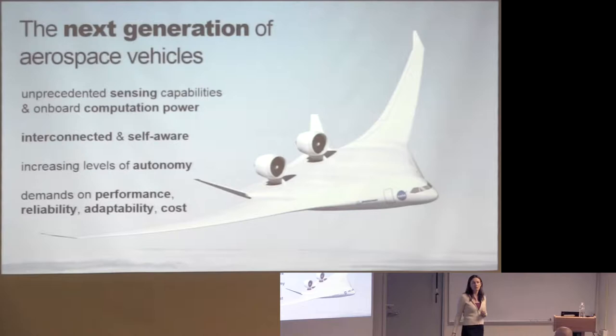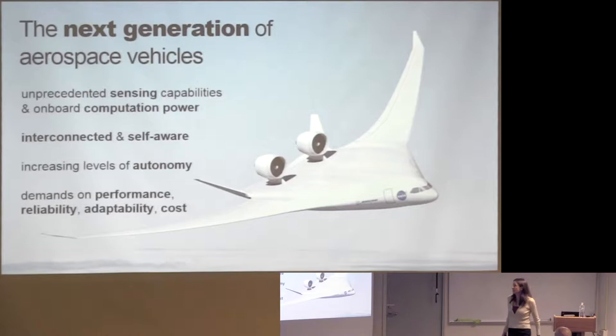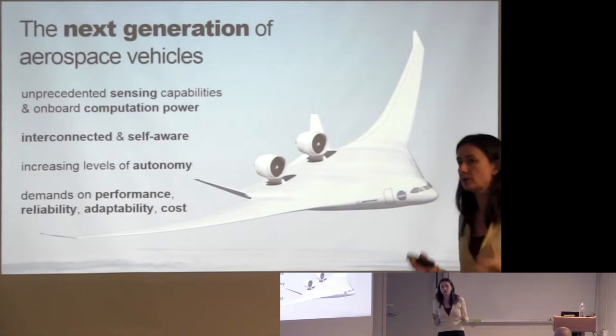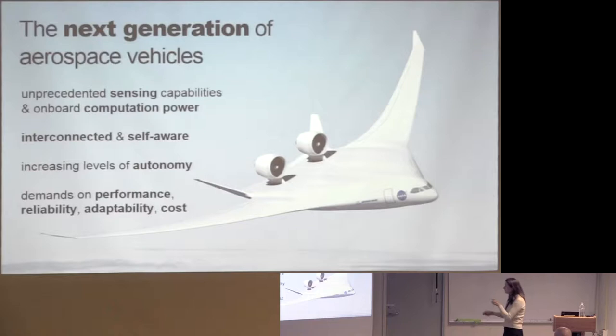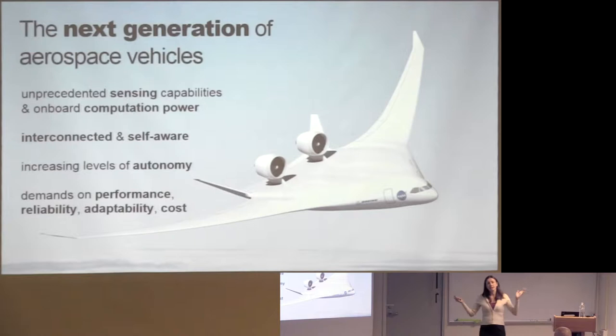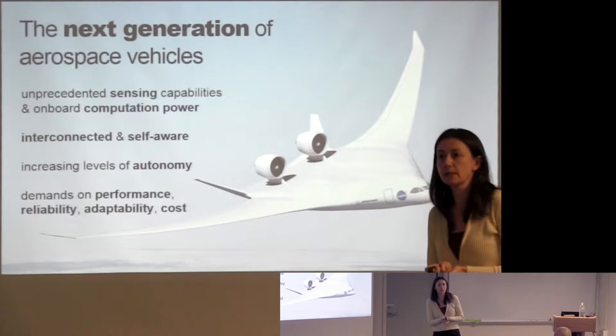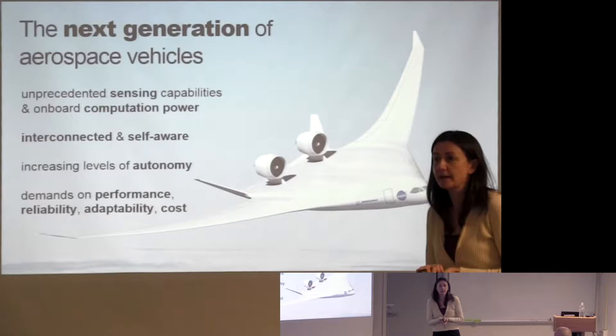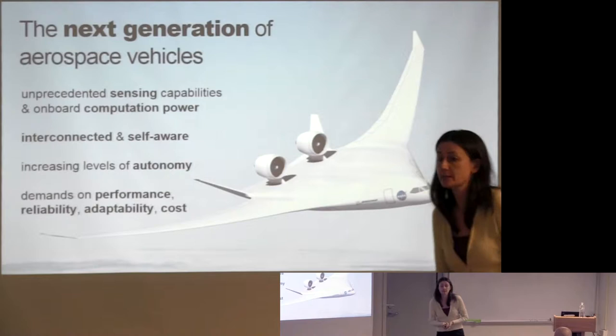Coupled with that is onboard computational power. The computational power of our phones now exceeds supercomputers of decades ago. Thinking about what we can put on board an aircraft and run in real time changes how you think about operating or flying the vehicle, and changes what kinds of vehicles you might design. The vehicles of the future will be increasingly interconnected and self-aware, and we're seeing increasing levels of autonomy — driverless cars are on everybody's mind, but autonomous aircraft are also a real and huge possibility, even delivering pizzas via autonomous UAVs.